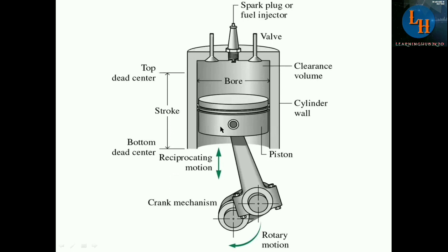The piston moves in a reciprocating action — it moves up and down. There is a maximum limit for moving up and a maximum limit for moving down. The upper limit is called the top dead center; the piston will not go above that line. The bottom-most position is the bottom dead center. The distance between them is called the stroke, denoted as L. The diameter of the cylinder is called the bore in engineering terms of the IC engine.